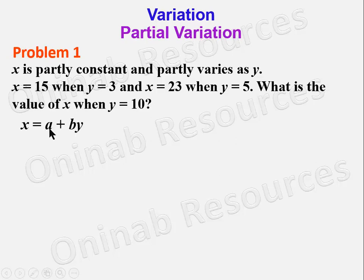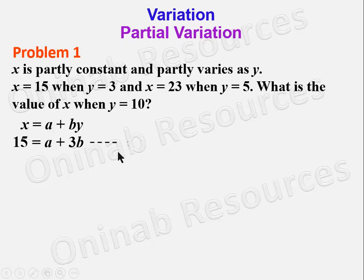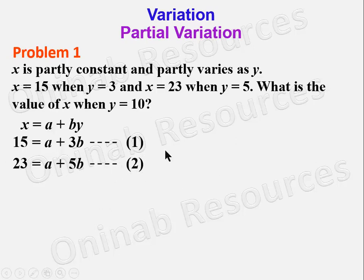We substitute x = 15 when y = 3 to get the first equation: 15 = a + 3b — call this equation 1. And x = 23 when y = 5 gives us: 23 = a + 5b — call this equation 2.